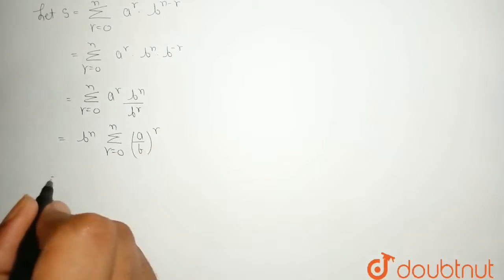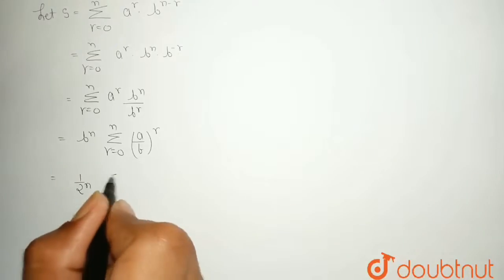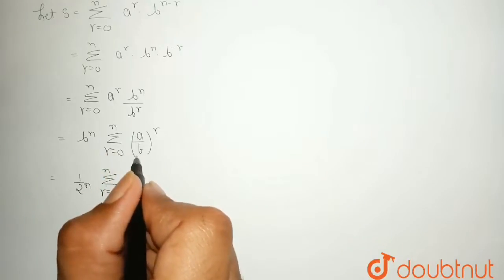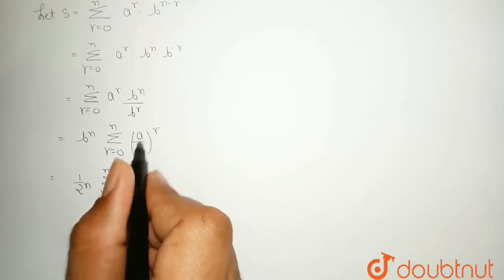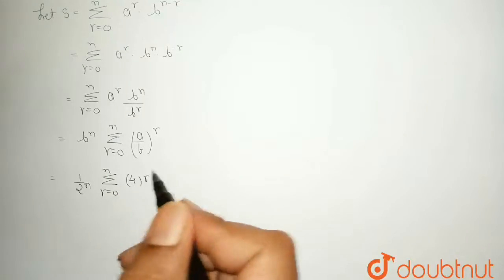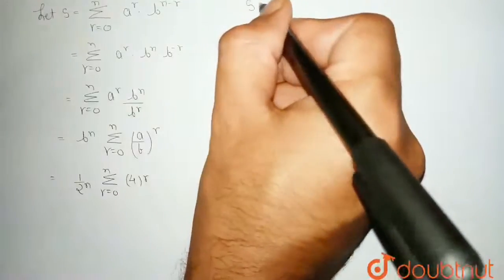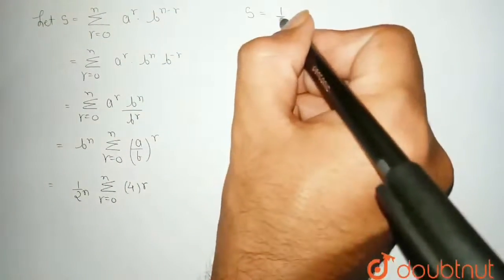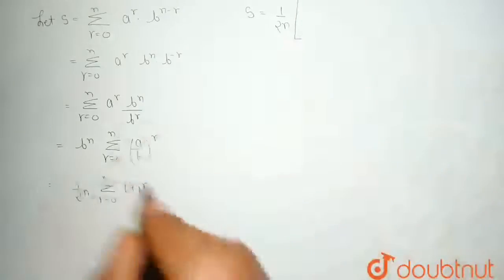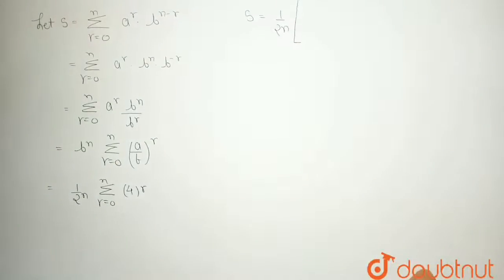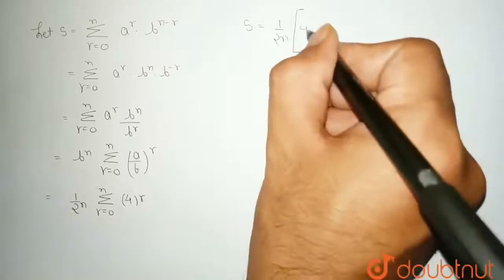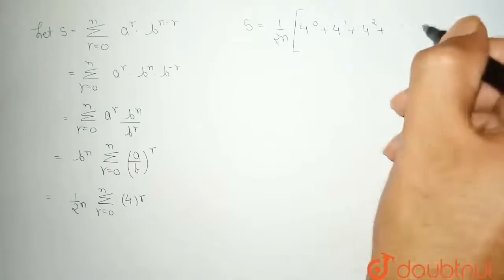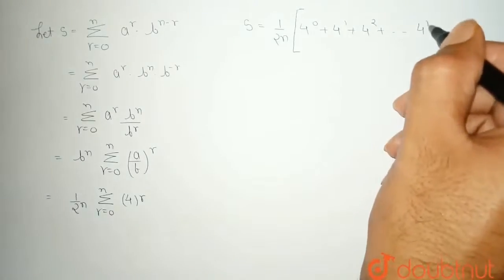Substituting the values a = 2 and b = 1/2: b^n = (1/2)^n = 1/2^n, and a/b = 2 ÷ (1/2) = 4. So S = (1/2^n) · Σ (r=0 to n) 4^r.